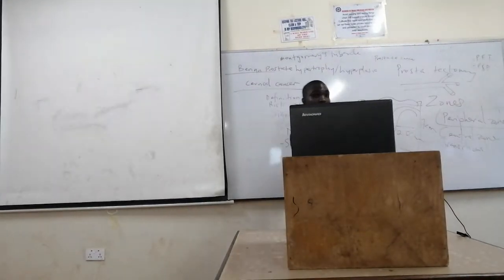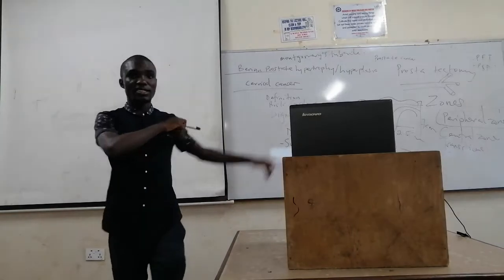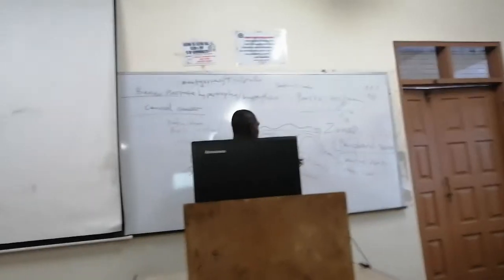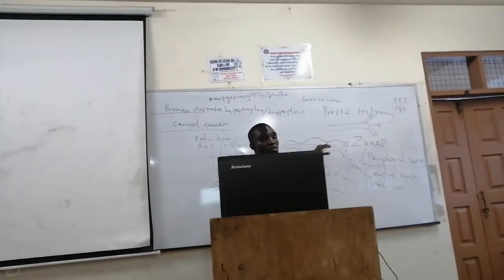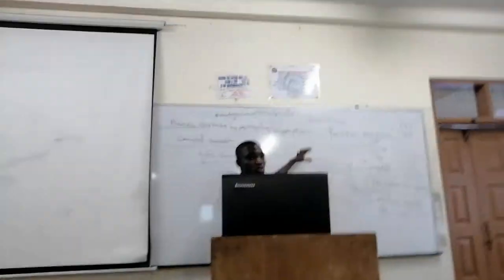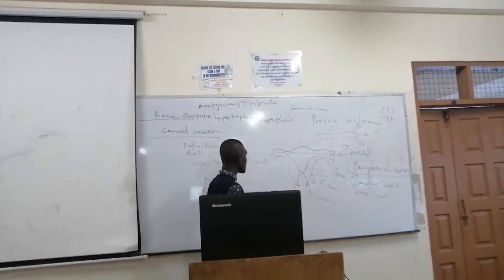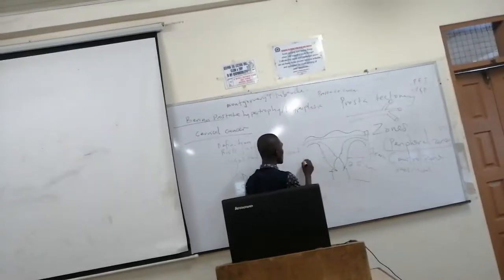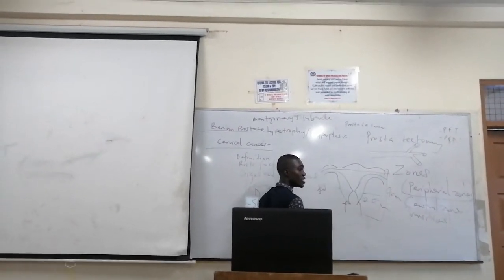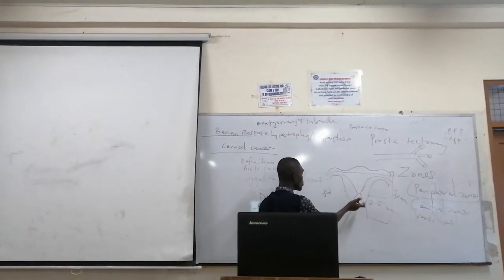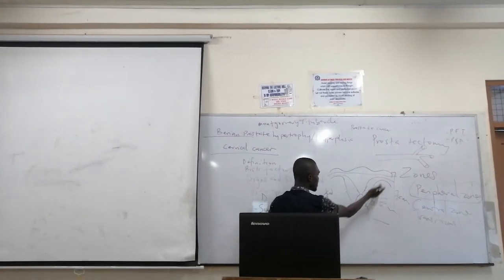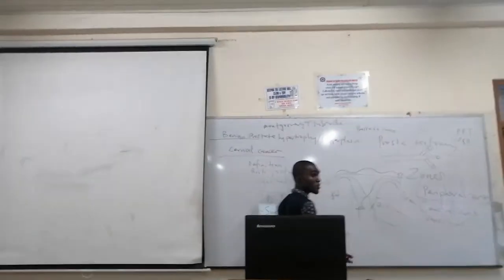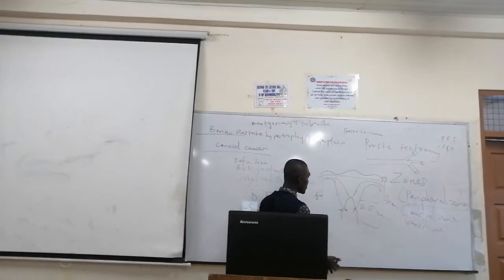The cervix forms the lower one-third of the uterus. If this whole thing is the uterus, the cervix starts from this part and then ends at this part. The whole uterus length is seven centimeters, and the cervix takes about 2.5 centimeters out of the seven centimeters.